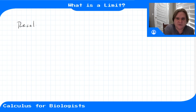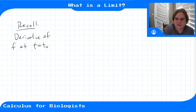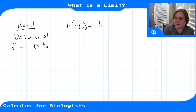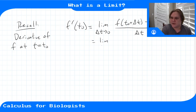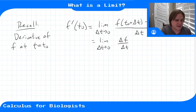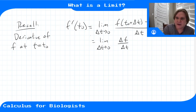In the last video we defined the derivative of a function f at a point t equals t0, written as f prime of t0, where this is equal to the limit as delta t goes to zero of f of t0 plus delta t minus f of t0, divided by delta t. This is the change in f over the change in t — our average rate of change — and we take the limit as the time interval gets smaller and smaller.